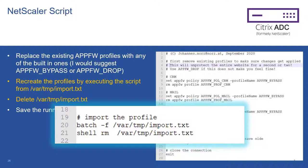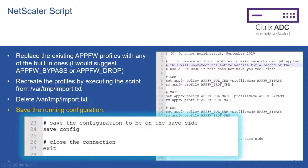The Citrix ADC scripting language — NetScaler batch — has a command called batch, which is used to execute scripts stored in a file. The shell command is a call to the local bash on the remote side to delete the import file we just executed. The last two commands are saving the configuration and leaving the remote Citrix ADC.